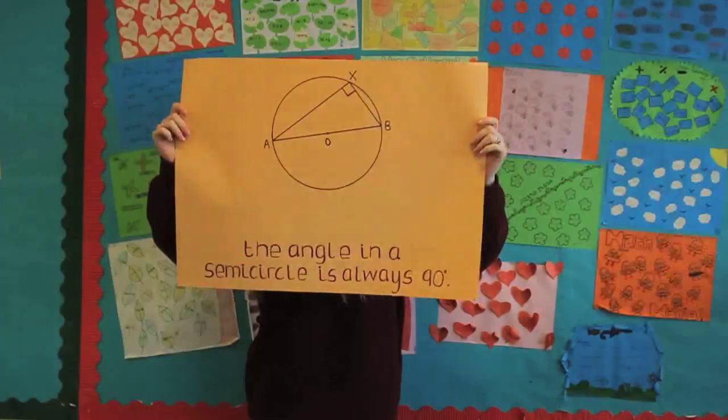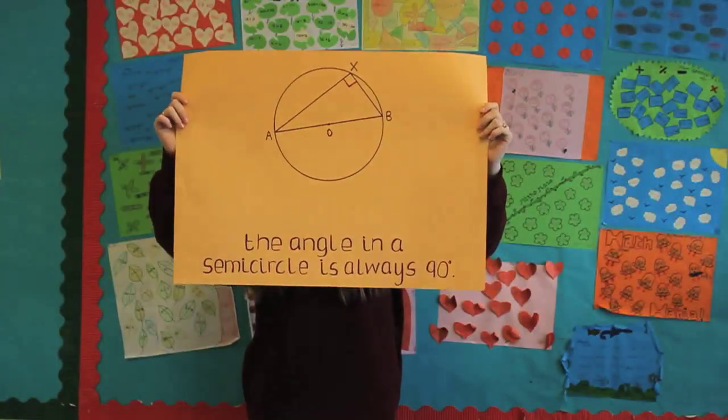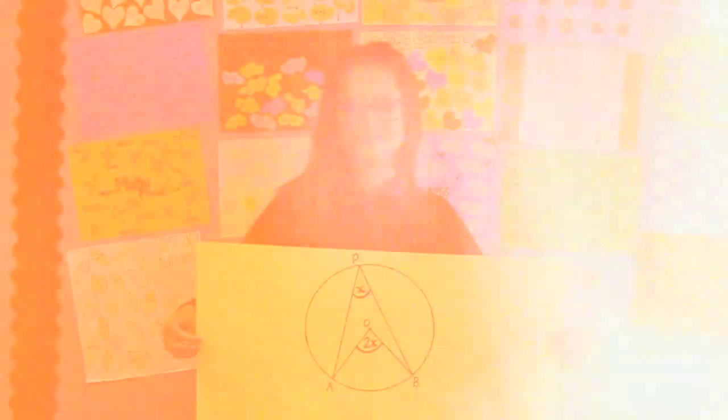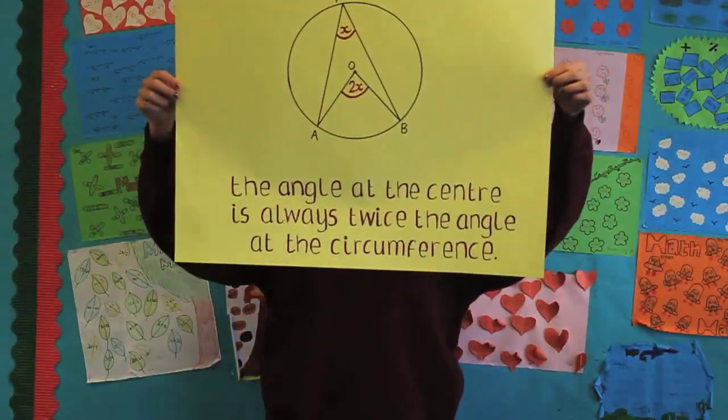The angle in a semicircle is always ninety degrees, and this is theorem number three. The angle at the centre is always twice the angle at the circumference.